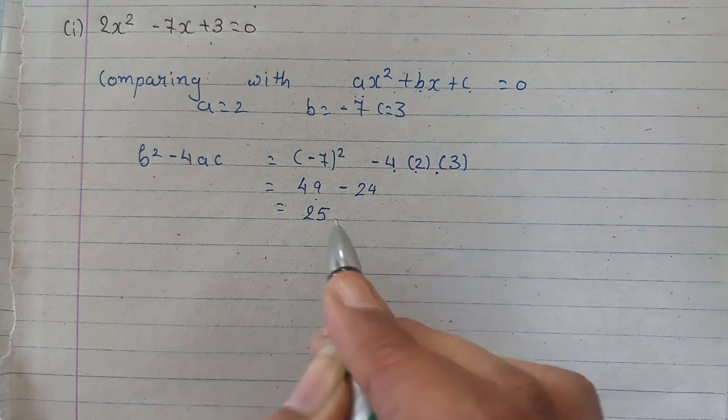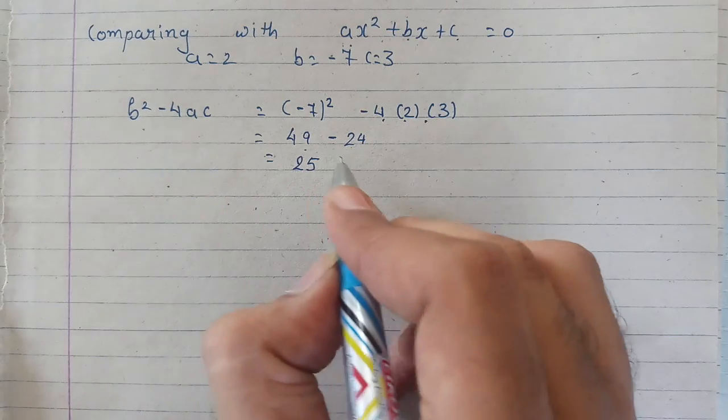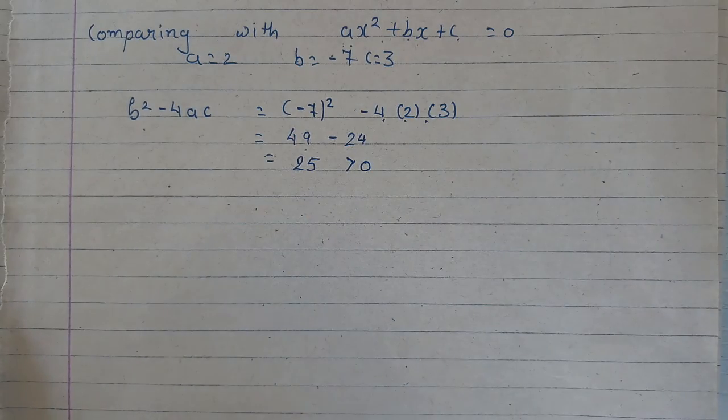49 minus 24 is 25. Now b square minus 4ac is greater than 0, meaning its roots exist.